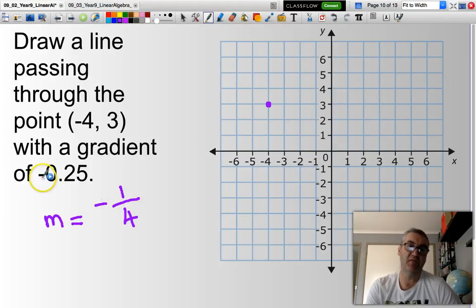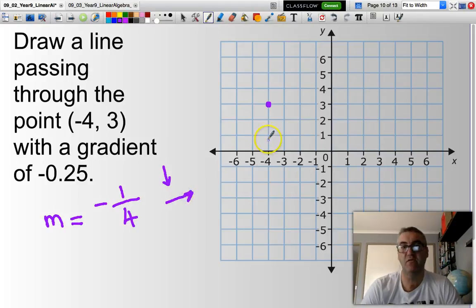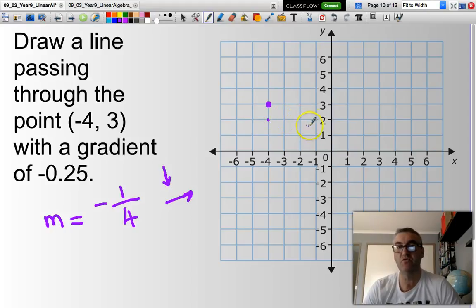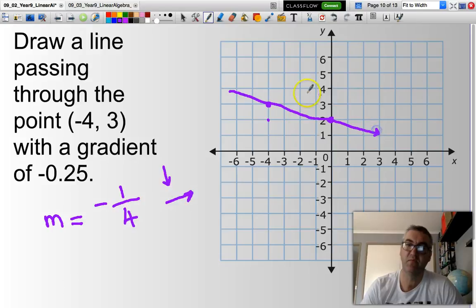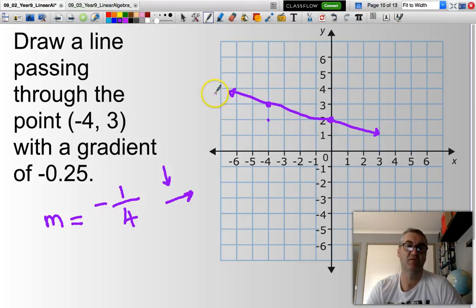Now, a negative means I'll be going down 1 and across 4. So let's go and find where I am. Down 1 takes me to there. Then across 4: 1, 2, 3, 4. Right there on the y-axis. And all I need to do now is have a go at drawing a line. That should be a straight line. Apologies. You get the general idea. So that is a line passing through the point negative 4, 3 with a gradient of 0.25.